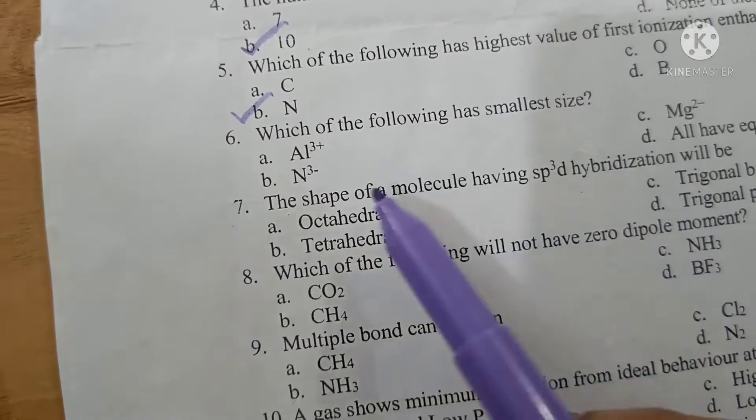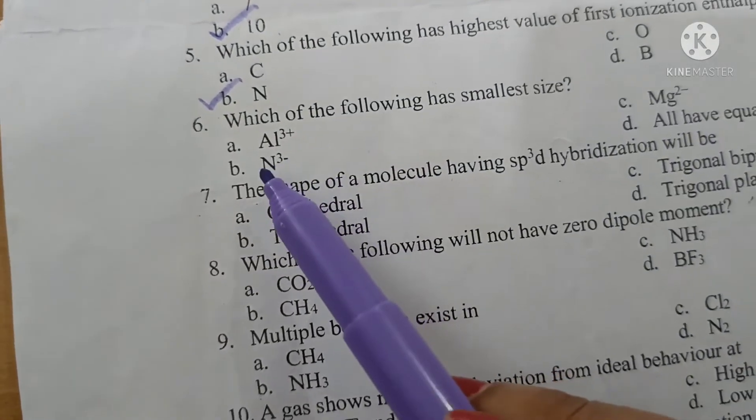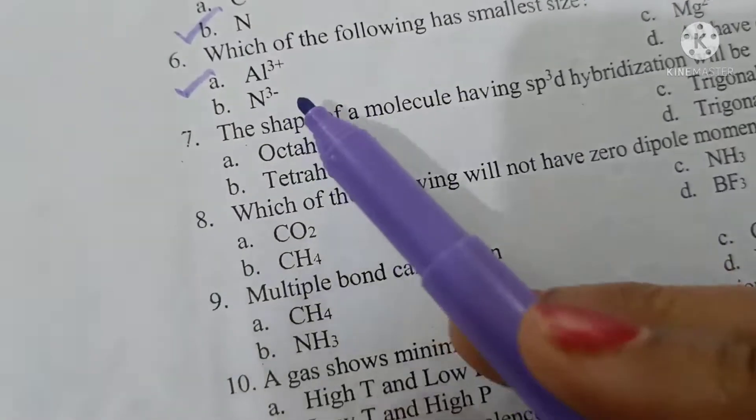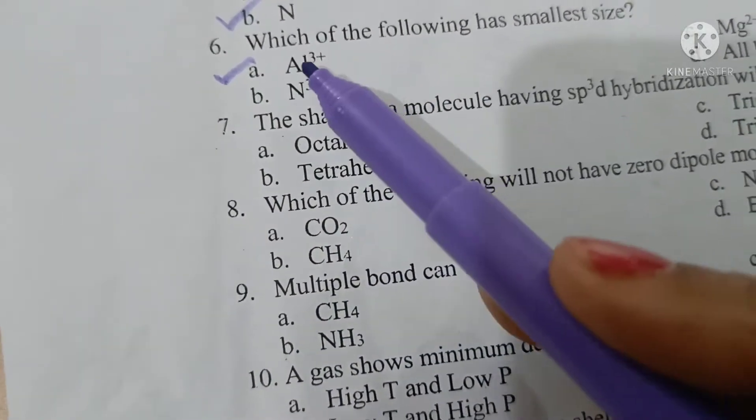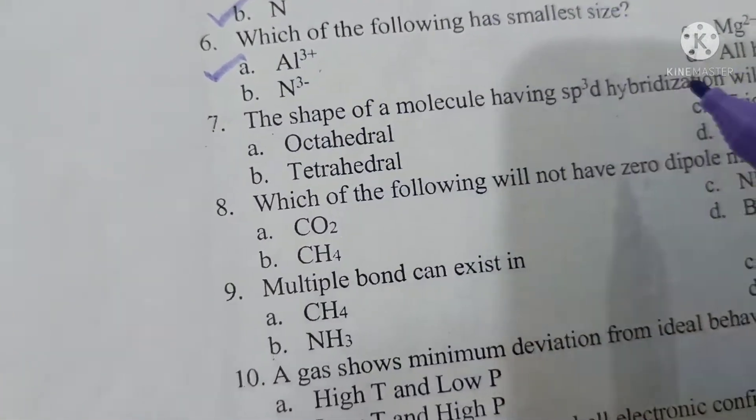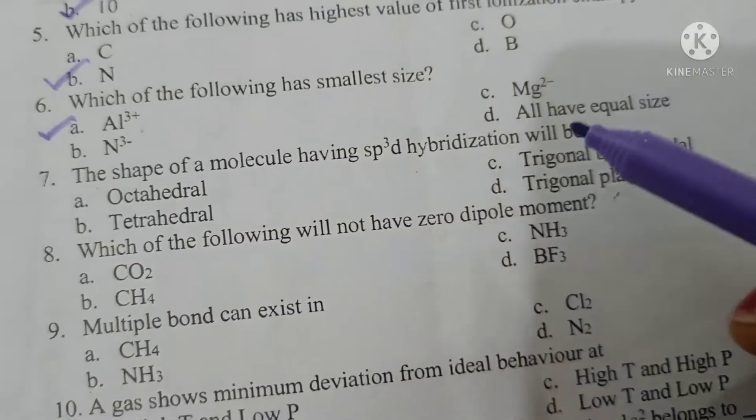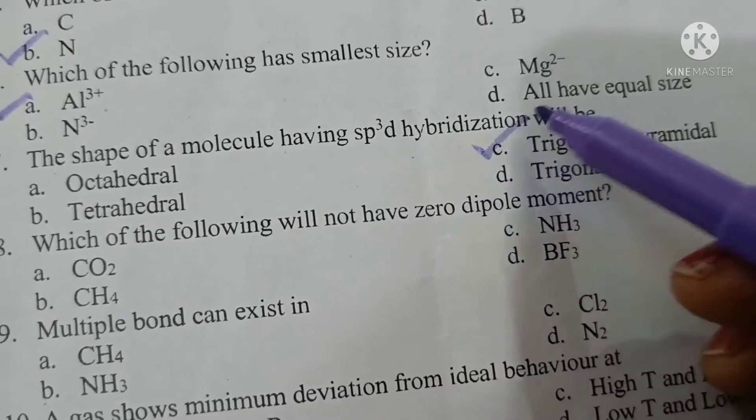Which of the following has smallest size? For isoelectronic ions, the element having the greatest nuclear charge will have the smallest size. So aluminum ions, option A is the correct answer. The shape of a molecule having sp3d hybridization is trigonal bipyramidal.